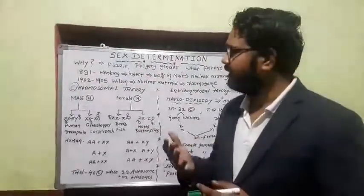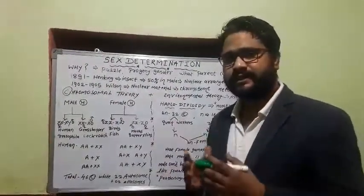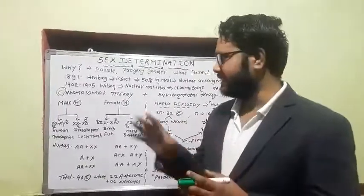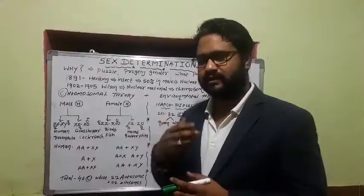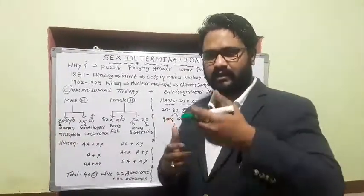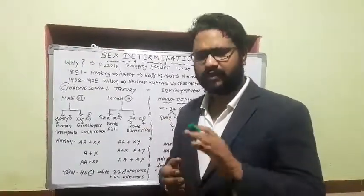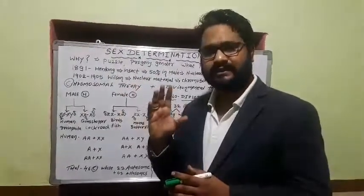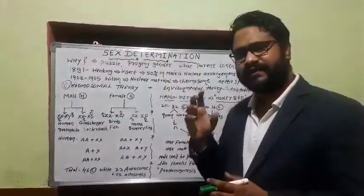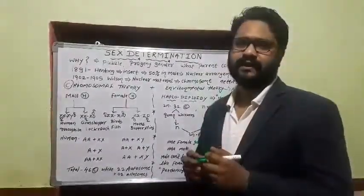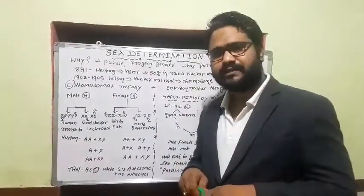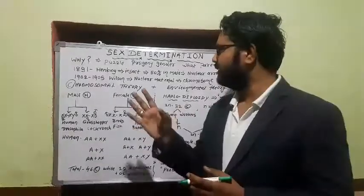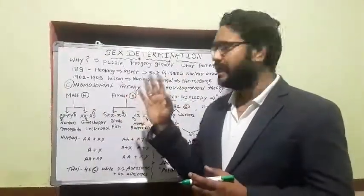German biologist Hermann Henking, in the 1890s, studied male and female insects, their eggs and sperm. At that era, microscopic study was only up to cell cycle and cell division — the inside steps of meiosis and different sub-steps were not yet developed. While studying sex determination in insects, he found that 50% of male insects had something different inside the nucleus.